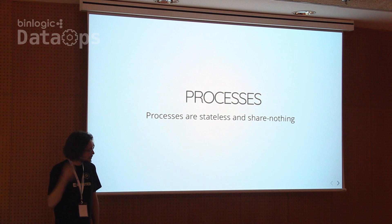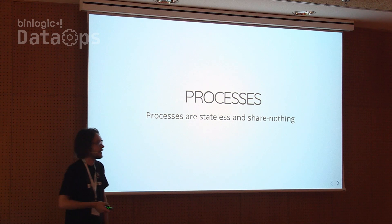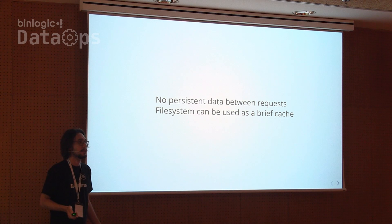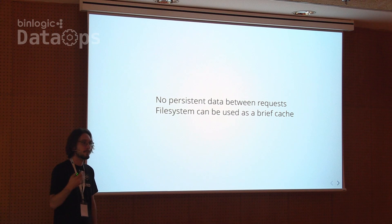In an immutable infrastructure type of architecture, you will have stateless processes that share nothing — no persistent data between requests. If you have dependencies where only one server can serve subsequent requests from the same user, that's usually an anti-pattern. It prevents us from scaling horizontally, so that's something that needs to be fixed.